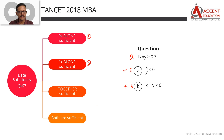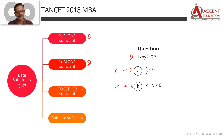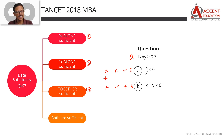Answer option 2: if B alone is sufficient, meaning B alone is sufficient and A is not sufficient, then we go with answer option 2. Answer option 3: if A alone is not sufficient and B alone is not sufficient, but when we combine the information from both A and B, the data is sufficient, then the answer is option 3.